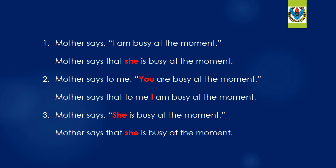Sentence number two: 'Mother says to me, you are busy at the moment.' 'You' is a second person pronoun, and it changes with the object of the reporting speech. The object of the reporting speech is 'me.' So the sentence becomes: 'Mother says to me that I am busy at the moment.' The second person pronoun changes with the object. Here the object is 'me', so we change it to its subjective case — 'me' is the objective case, and we change it to 'I'.